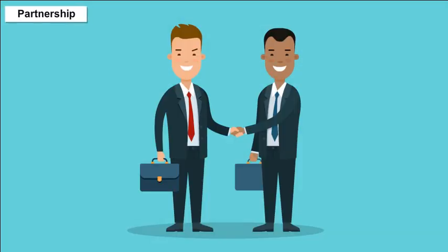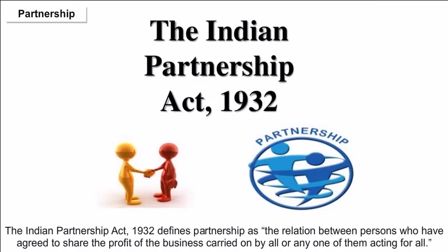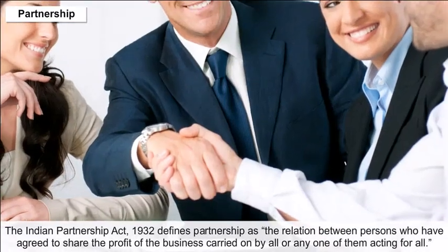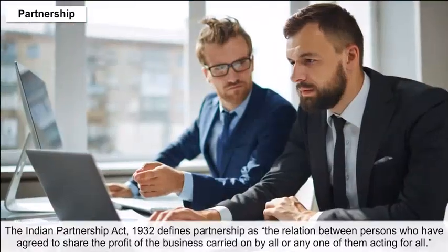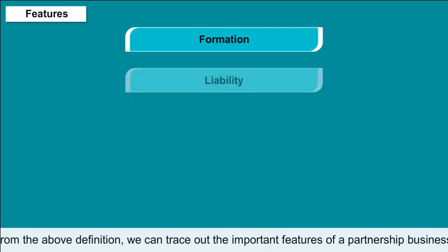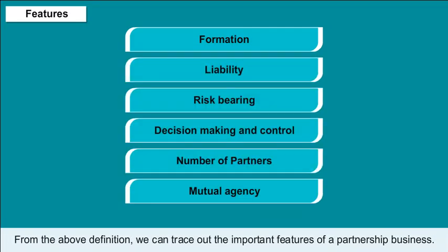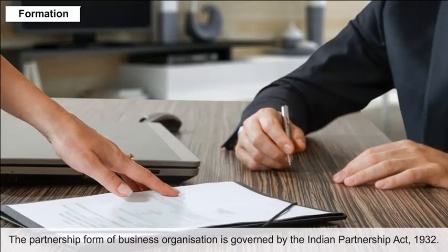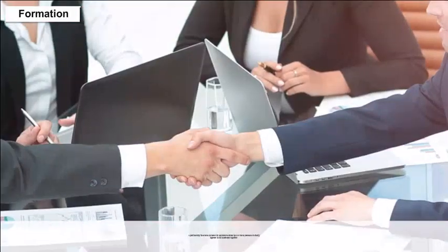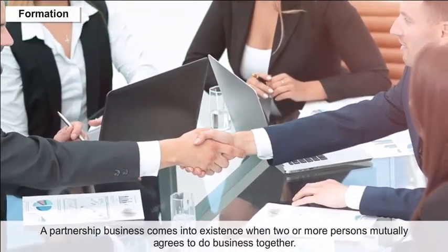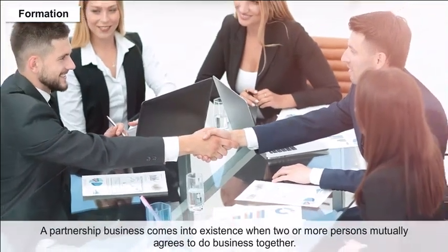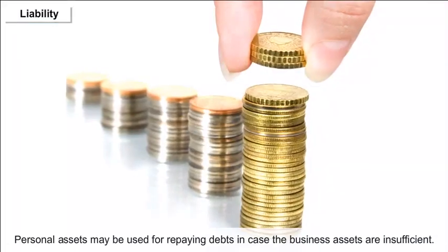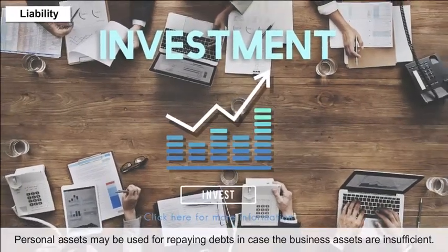Partnership: The Indian Partnership Act 1932 defines partnership as the relation between persons who have agreed to share the profit of a business carried on by all or any one of them acting for all. Formation: A partnership comes into existence when two or more persons mutually agree to do business together, governed by the Indian Partnership Act 1932. Liability: Partners have unlimited liability; personal assets may be used for repaying debts if business assets are insufficient.